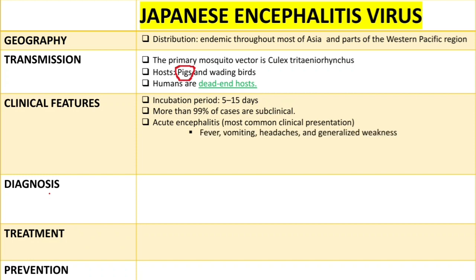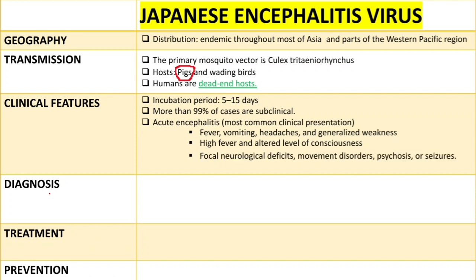Acute encephalitis is usually characterized by fever, vomiting, headaches, and generalized weakness. Altered levels of consciousness will be noticed, and these symptoms will begin to increase until focal neurological deficits, movement disorders, psychosis, or seizures are noticed. In severe cases, coma, flaccid paralysis, and death can happen.